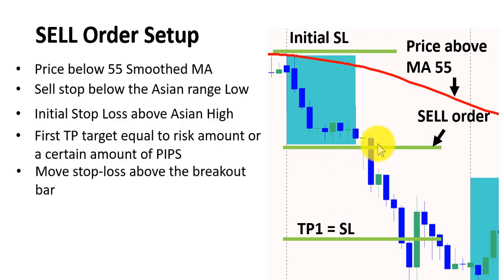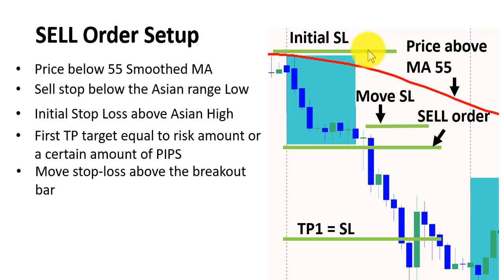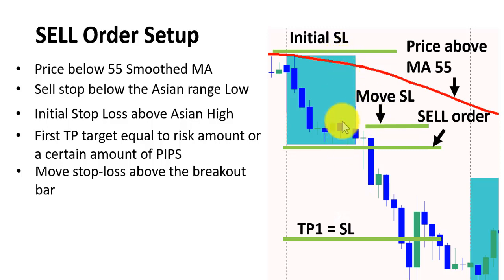Once you are in the market, having entered through this bar, you immediately reduce your risk further by moving your stop loss. Your stop loss that used to be at the top of the range, you move it down just above the breakout candle — the candle at which you were triggered into the market. Look at what happened: your stop loss used to be 20 pips, but now it has reduced significantly — perhaps to just 4 or 5 pips. So you are reducing your risk even further.